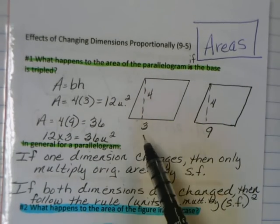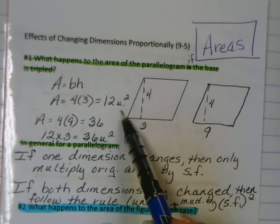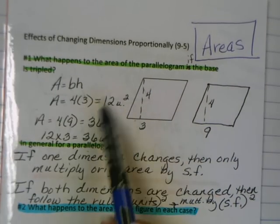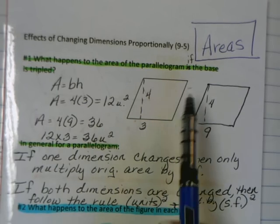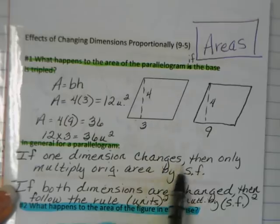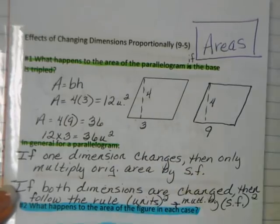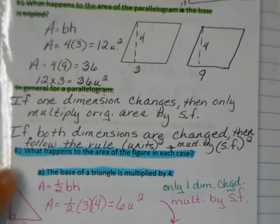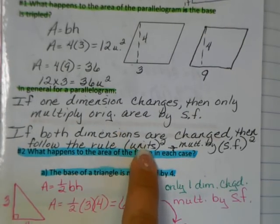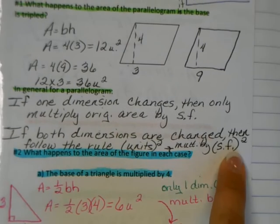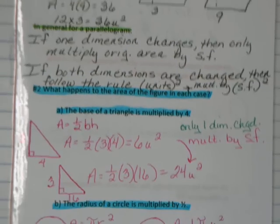But notice that doesn't really follow the rule because our rule said if the area had units squared, I squared the scale factor and multiplied that. This is the case only because we only multiplied or changed one dimension. If you only change one, then the area is going to be multiplied by just the scale factor itself, not scale factor squared. If we change both dimensions, then you follow the rule where you square your scale factor and multiply that by the original area.